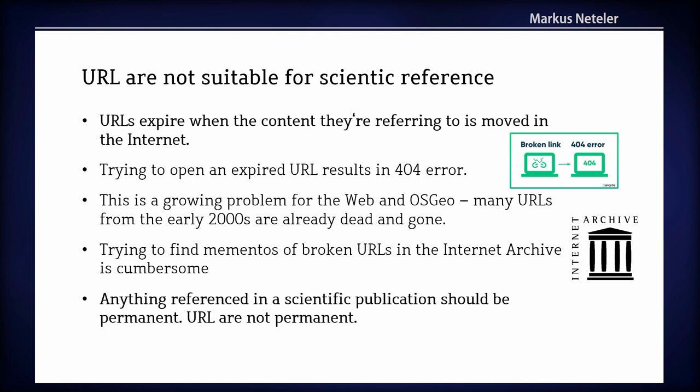URLs are not suitable for scientific reference — you all know this. URLs expire when the content they refer to is moved or deleted from the internet. It's a broken link, a 404 error. This is a growing problem, especially for OSGEO, because over the 20 years we've been doing this, when you go to old emails, many of these links are broken. You can go to the internet archive to find echoes of the mementos, but it's really ugly. Anything referenced in a scientific publication should be permanent, and URLs by design are not permanent.